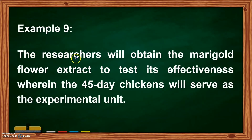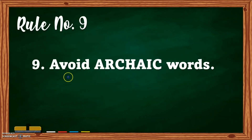Example number nine: 'The researchers will obtain the marigold flower extract to test its effectiveness wherein the 45-day chickens will serve as the experimental unit.' What is wrong? The word 'wherein.' We have to avoid archaic words because they are outdated. Instead, you can use 'whereas.' Remove old, outdated words from your writing.